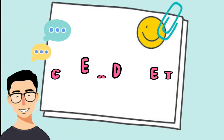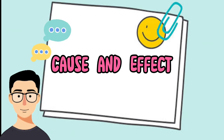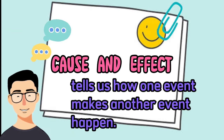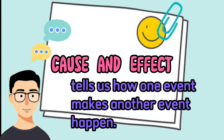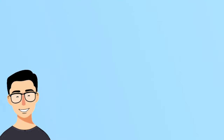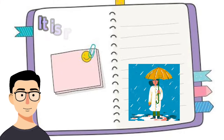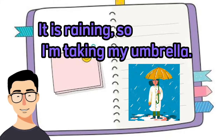Cause and Effect tells us how one event makes another event happen. For example, it is raining so I'm taking my umbrella.